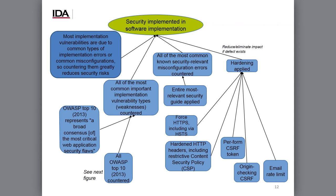So all the most common important implementation vulnerability types are countered. OWASP has a list of the broad consensus of the most common web application security flaws, and this is a web application. So somebody else has identified for us the most common problems — let's make sure we walk through each of those and do our best to counter them. There are also a number of ways to misconfigure things, but we believe the most common known security-relevant misconfiguration errors have been countered. How? We grabbed a relevant security guide — in this case one for Ruby on Rails — walked through the guide, and made sure we were configured consistently with its recommendations.